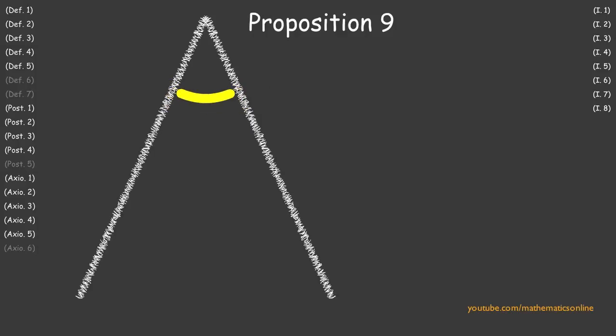In Proposition 9, we prove that with any angle, we can always bisect it into two congruent angles.